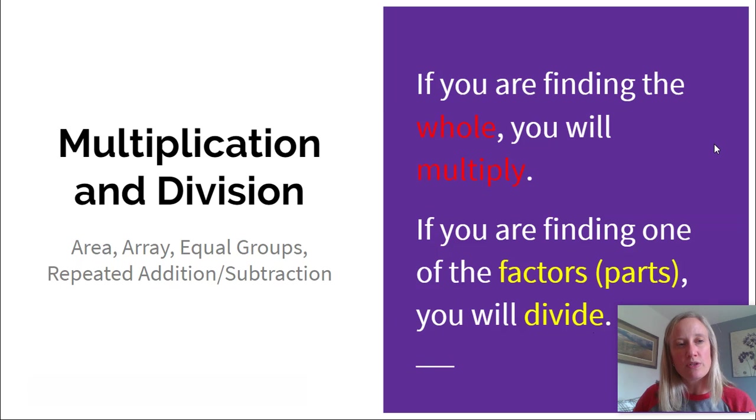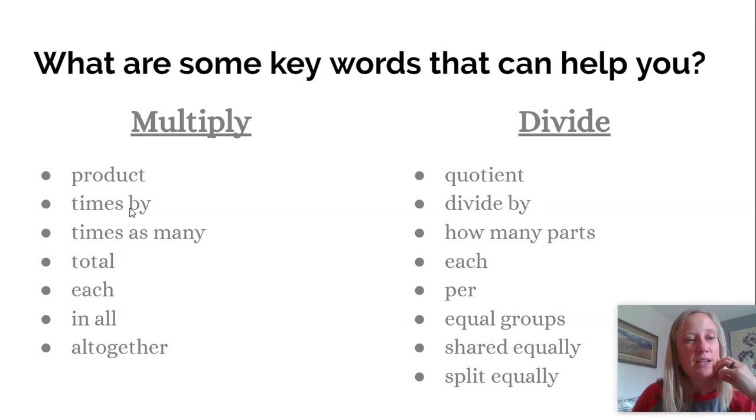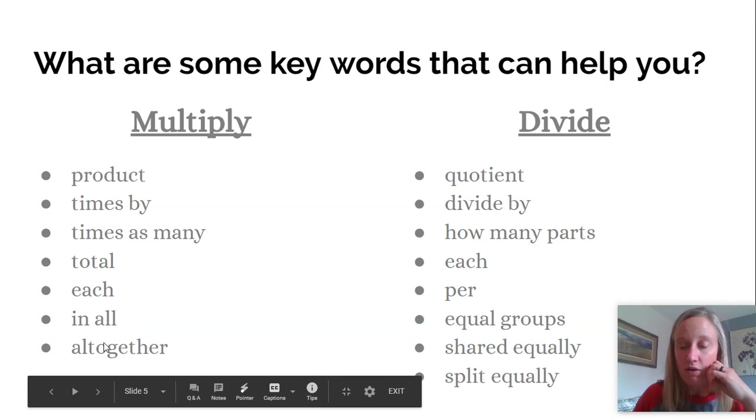So what words might prompt you to think that it's multiplication or division? Well, product always means multiply. If it says find the product, you have to multiply. Some other words that are hints that this is a multiplication story are words or phrases like times by or times as many. There are three times as many. Total, each, in all, or all together. Those words can all signal that you are supposed to multiply.